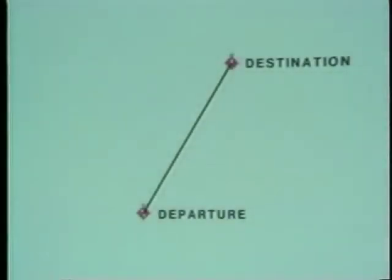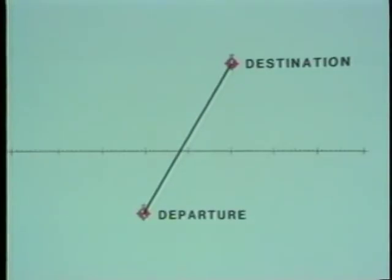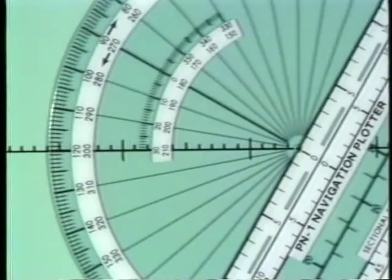The outer scale on the protractor represents easterly courses, and the inner scale represents westerly courses. If your course does not cross a line of longitude, you can use a line of latitude for the measurement — the small north-south scales are used instead of the larger east-west scales. In this example, the true course is 30 degrees.